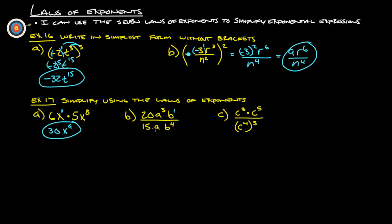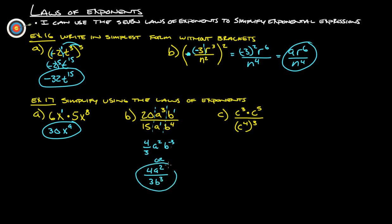20a cubed b to the 1st over 15a to the 1st b to the 4th. We can simplify in three parts: 20 over 15 is 4 thirds. a to the 3rd over a to the 1st — 3 minus 1 is a squared. b to the 1st over b to the 4th is b to the negative 3rd. So the better way to write it is 4a squared over 3b to the 3rd.